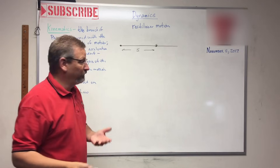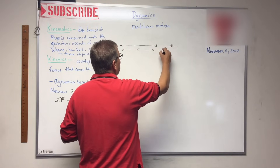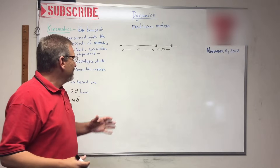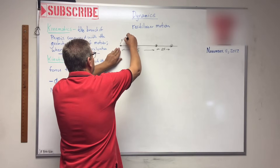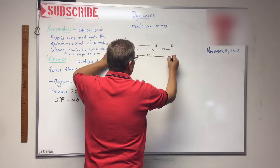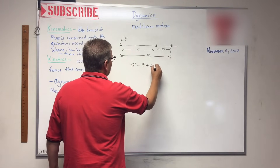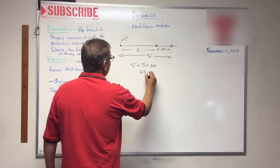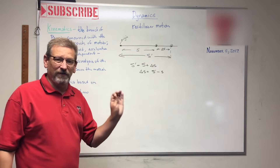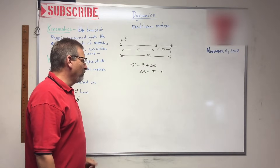Let's say that particle moves from that position to a new position — it moved. We'll call that delta s. Delta s is the amount that it moved. If this is the origin over here, then that over there is the final position, which we'll call s prime. So s prime equals s plus delta s, or delta s equals s prime minus s. That's about the position of the particle. Remember: when writing equations, position is represented with s, not x.